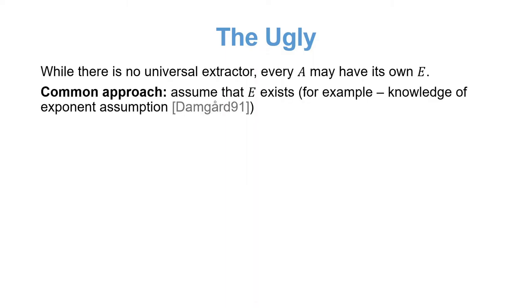To get around those barriers, there are a few alternatives. First, we could use a non-explicit extractor, meaning the existence of the extractor is only assumed for every adversary. This can be achieved, for example, using knowledge assumptions, such as the knowledge of exponent assumption.